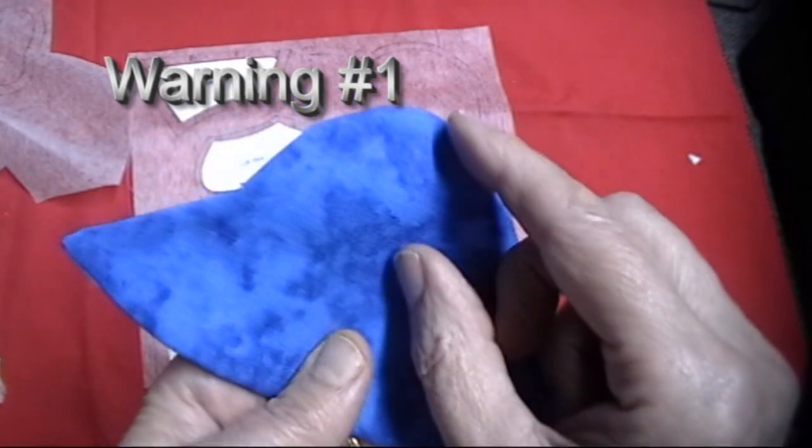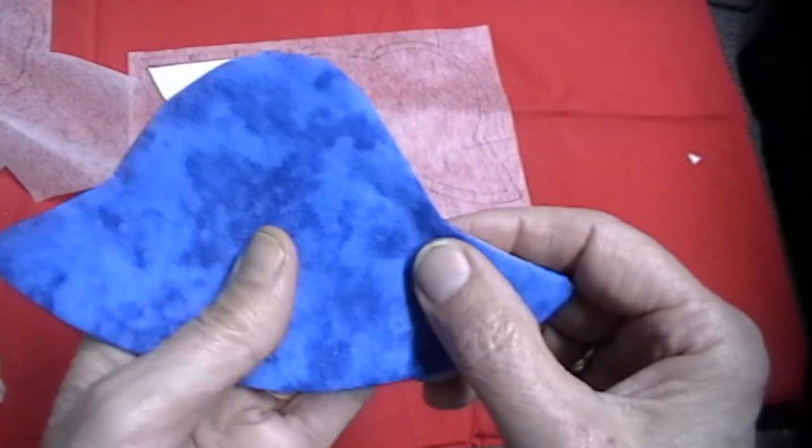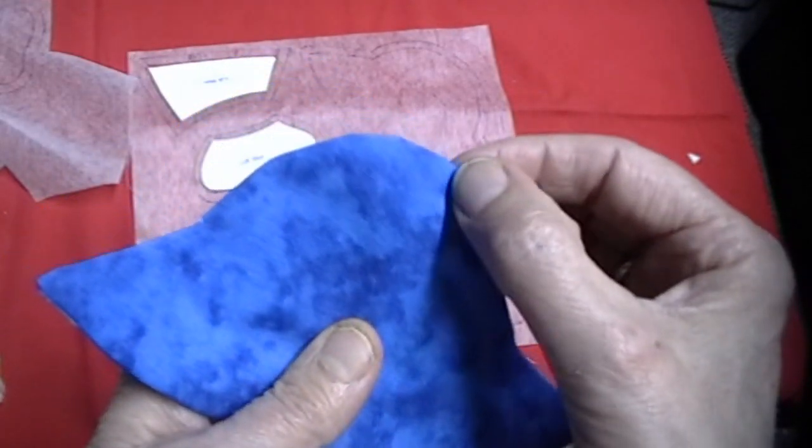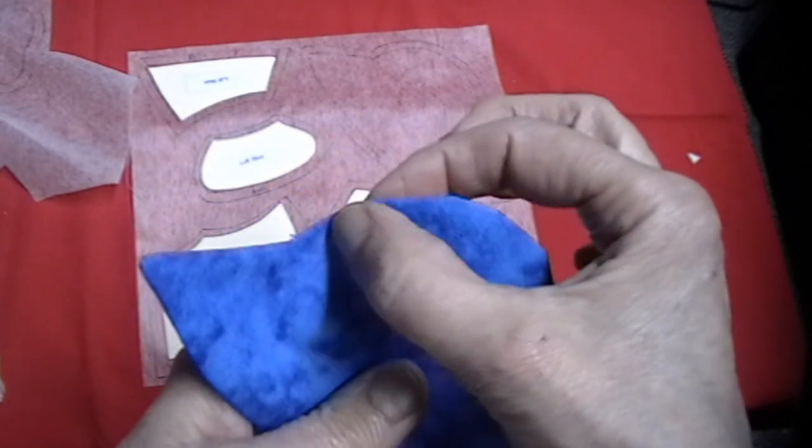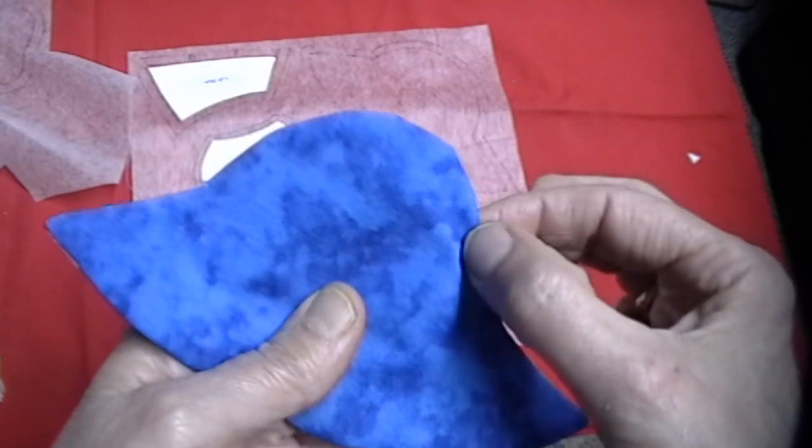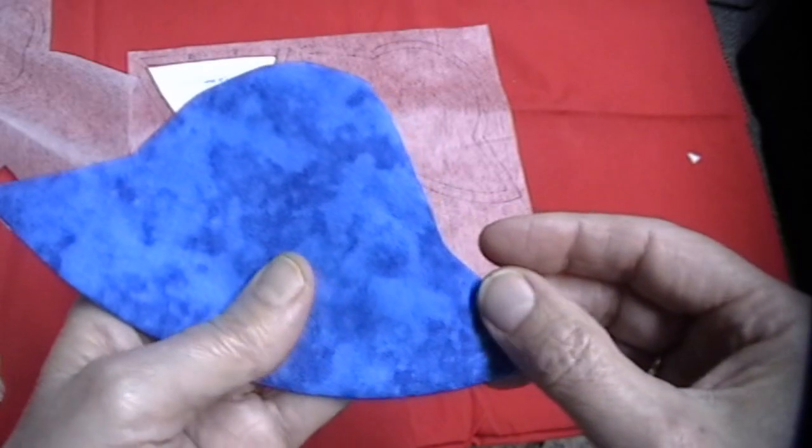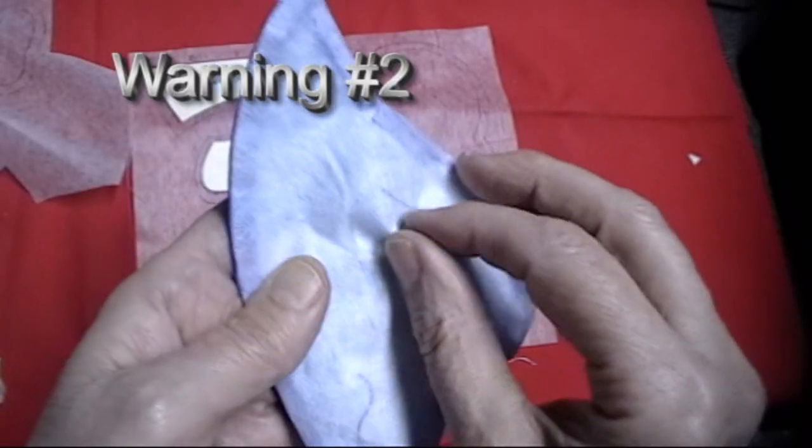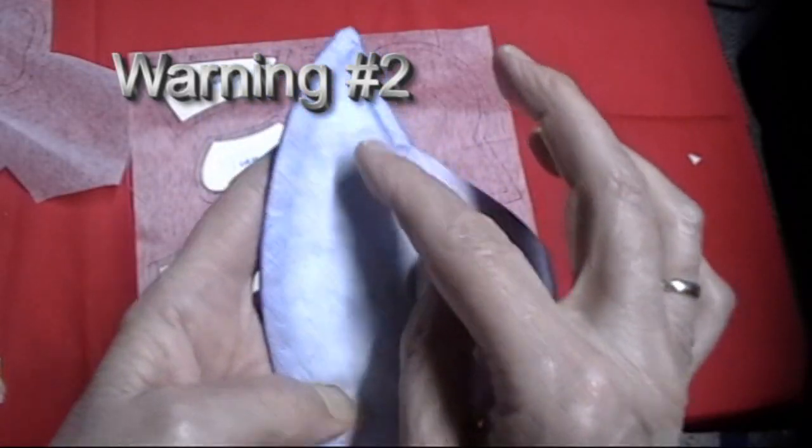You need to sew with small stitches. Small stitches because it will help one, for your curves to be better because it will be close together it will be easier to make your curves and two, it helps it from not tearing.